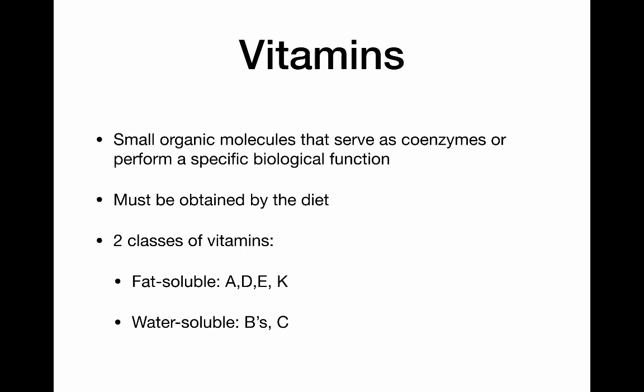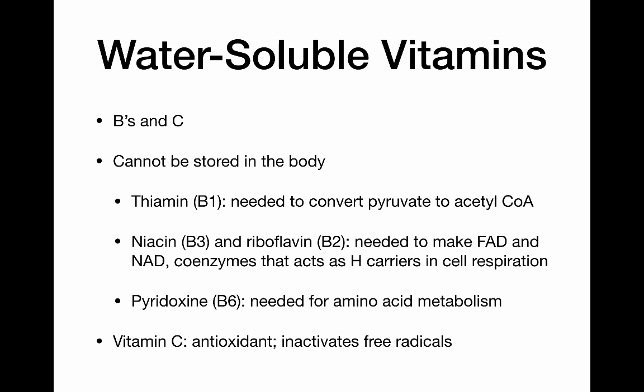Our vitamins are divided into two classes: the fat-soluble vitamins — A, D, E, and K — and the water-soluble vitamins, which are all the B vitamins and vitamin C. The water-soluble vitamins, because they're water-soluble, don't get stored in the body. They can't get out of the plasma and into body cells for long-term storage, so they don't get stored in our fat.